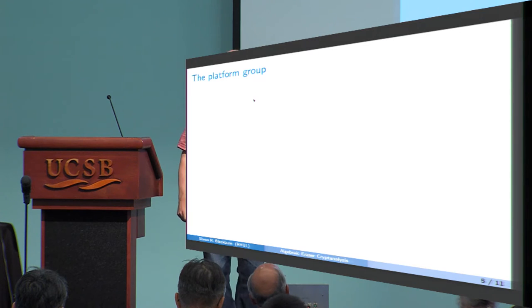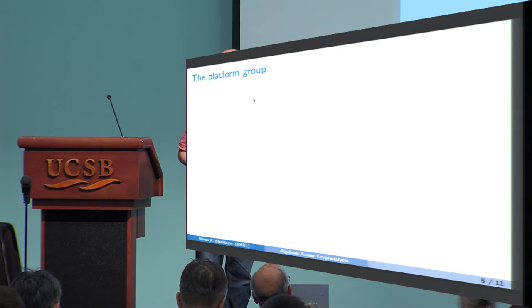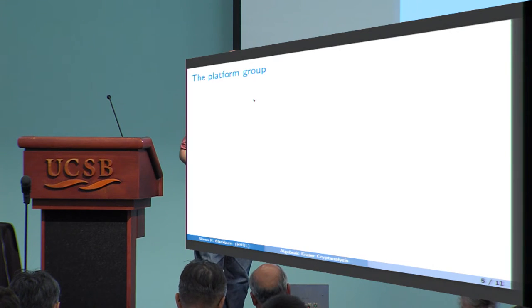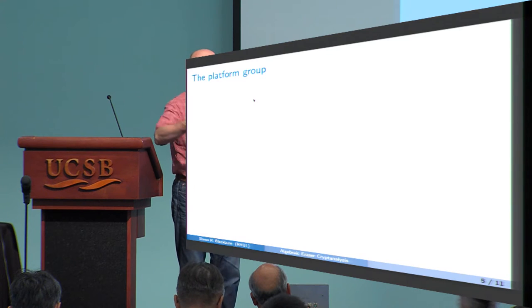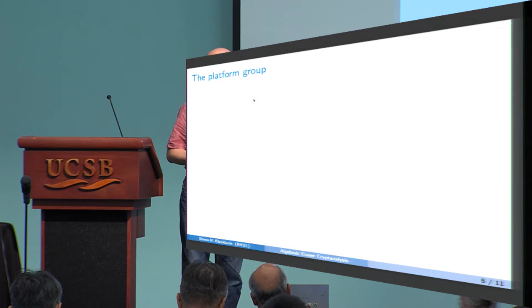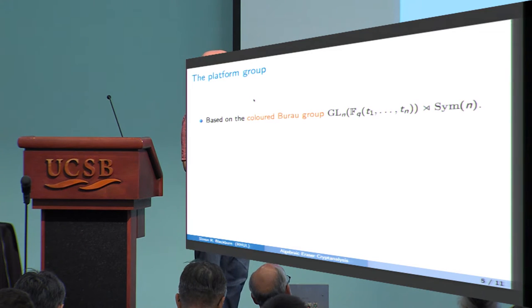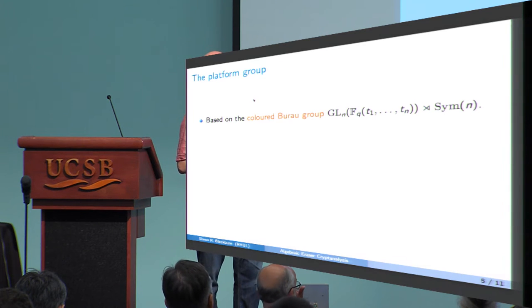So, it's a group-based scheme. And so I'm going to talk about now the private information that Alice and Bob use to generate their public key. And this is from an infinite group. This is equivalent to the group in the exponent in Diffie-Hellman. That's just the integers, under addition, or integers modulo p minus 1, something like that. So here, the equivalent to the group in the exponent is the coloured Burau group. It's got this sort of cool symbol here. This is a semi-direct product. GL_N(F_Q)[T_1 to T_N], semi-direct product, a symmetric group on N letters.